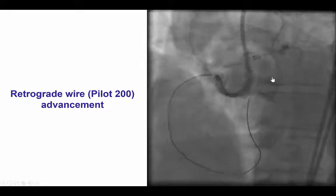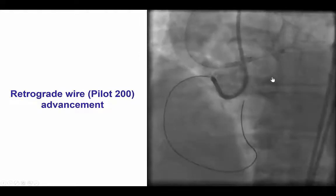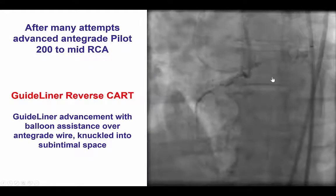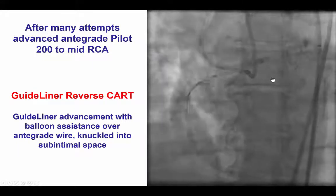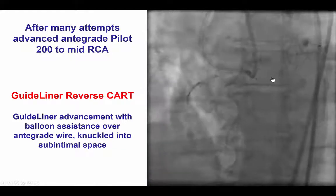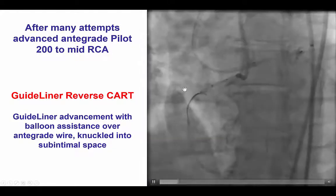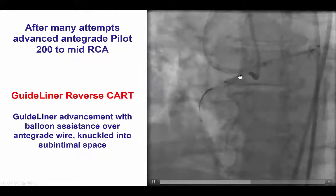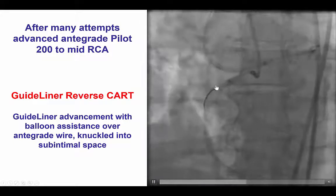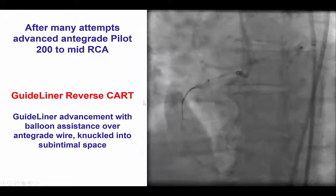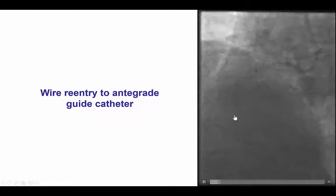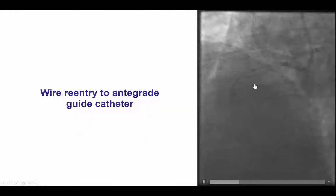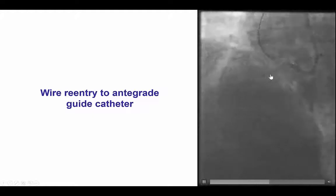We were, however, unable to retrograde cross the occlusion due to tortuosity, and we spent a lot of time trying to advance an antegrade guide wire, more than one hour. Eventually we were able to advance an antegrade PILOT 200 guide wire into the proximal right coronary artery in the subintimal space, and then following balloon predilatation, we advanced an antegrade guideliner into the proximal right coronary artery, and then we performed a guideliner reverse CART by advancing a retrograde PILOT 200 guide wire into the antegrade guideliner microcatheter.